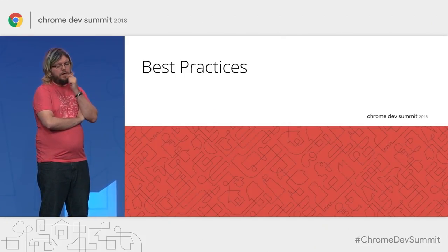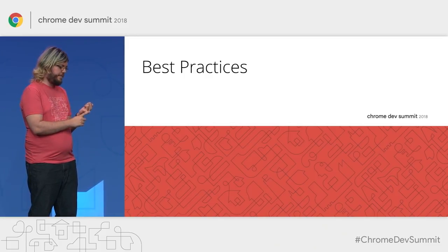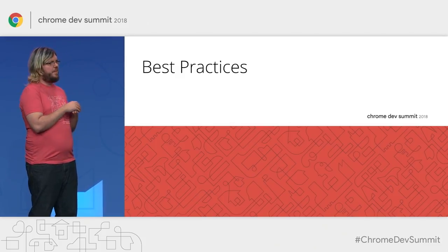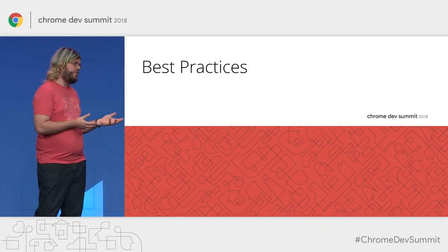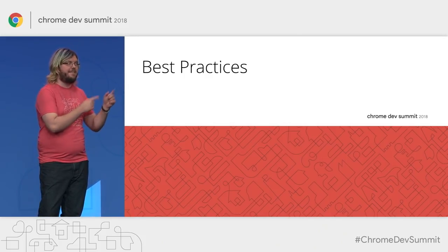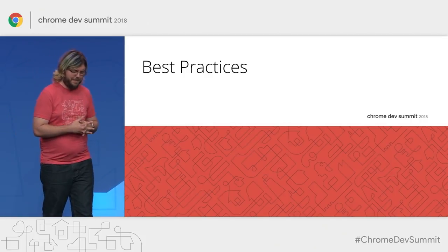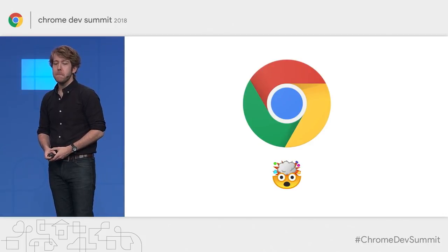TOM GREENAWAY: So from the tool side, we have Lighthouse audits for SEO, Search Console, the mobile-friendly test, and the rich results test with live editing features. I think we're pretty good on that front. Do you have any recommendations in terms of best practices that I should tell my friend Marvin? MARTIN SPLITT: Let's go through a few.